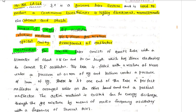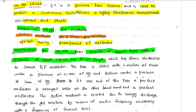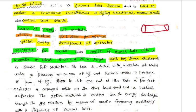The helium-neon laser consists of a quartz tube with a diameter of about 1.5 cm and a length of about 80 cm. The tube has 3 electrodes which connect to the radio frequency oscillator.